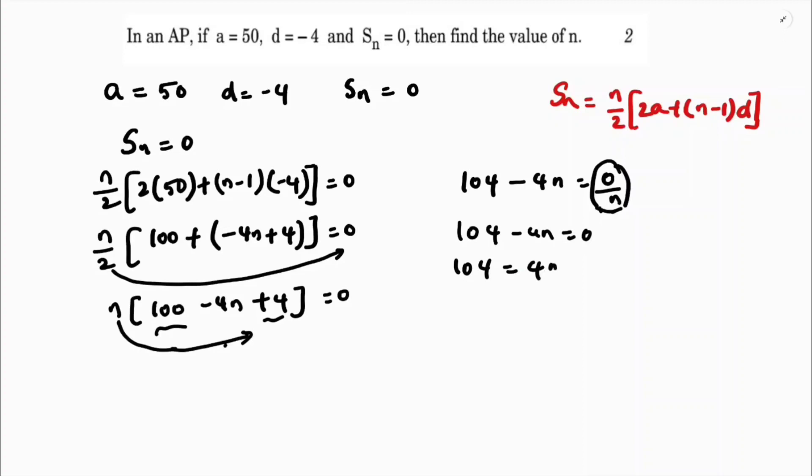104 equals 4 times n. 104 by 4 equals n. So, 4 times 26 is 104. Therefore, the value of n is 26.